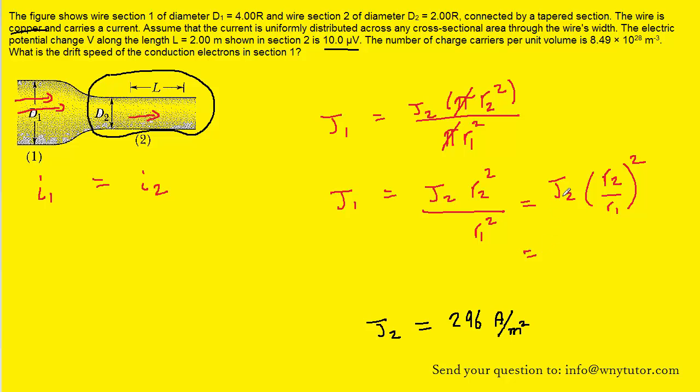We know the current density in section 2 of the wire. That's 296 amps per meter squared. The radius of section 2 was stated indirectly. We have the diameters of section 1 and of section 2. So we can convert those into radii. We can see that R1 would just be half of that diameter, so that would be 2.00R. And then R2 would be half of its diameter, so that would be 1.00R. So we will plug in those values for R2 and R1.